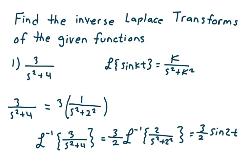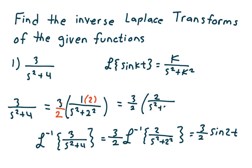So I want k to equal 2, but I'm missing a 2 in the numerator. But that's okay — I can put that in. So I'm going to multiply the numerator by 2 and then divide by 2, so it's like multiplying by 1. And so this is equal to 3 halves times 2 over s squared plus 2 squared.